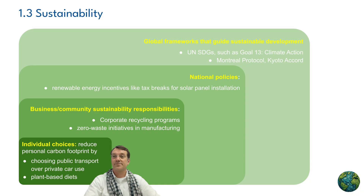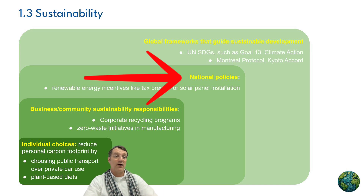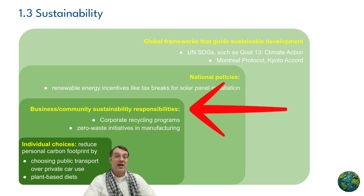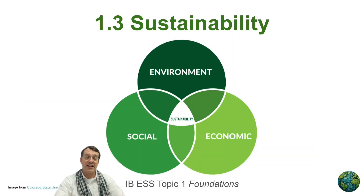Sustainability and environmental justice apply at multiple scales, from individual action in local communities to global initiatives requiring international partnerships. These scales are nested: at the global level, the UN Sustainable Development Goals and agreements like the Montreal Protocol and Kyoto Accord provide a global framework. At the national level, governments may offer renewable energy tax incentives. At the regional/community level, corporate recycling or zero-waste programs operate. Individually, choices like using public transportation or adopting plant-based diets also make a difference. The next video will look at measuring sustainability and models used around the world.